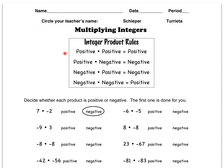Here we have the integer product rules, so we know that a positive times a positive equals a positive. A positive times a negative equals a negative. A negative times a positive is also negative, but a negative times a negative is a positive.